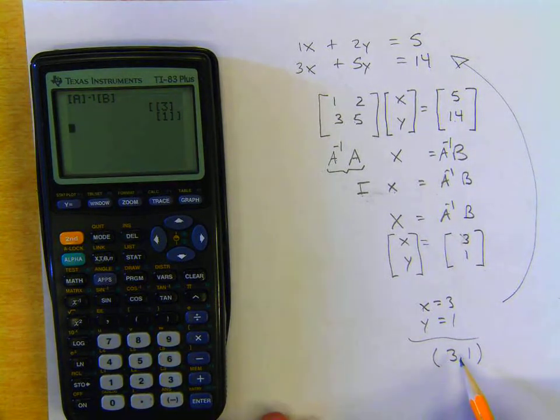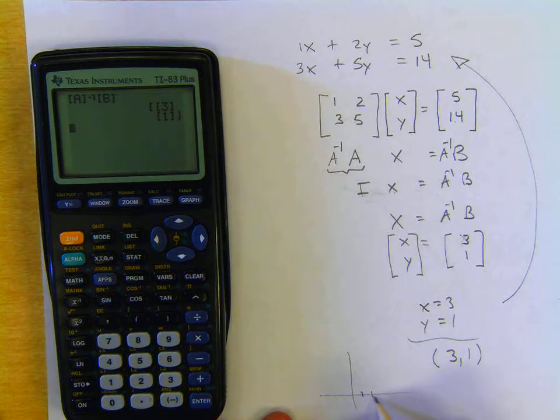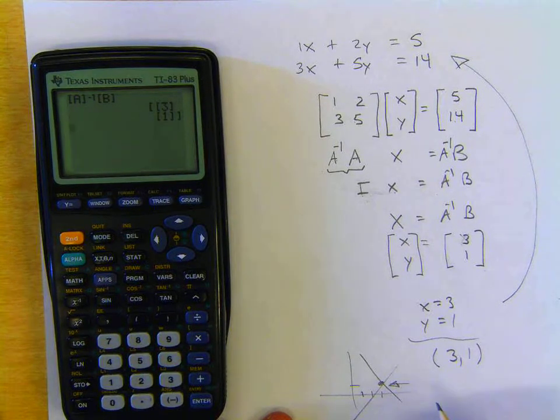Or we could say it's at the coordinate 3, 1. What does this mean? This means that if you were to graph these two lines, they would intersect at that coordinate, 3, 1.